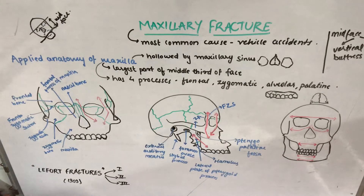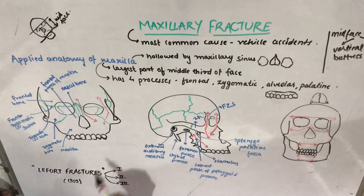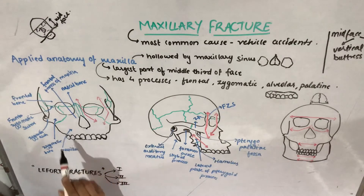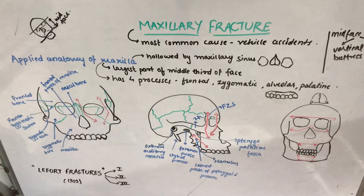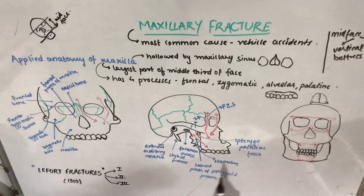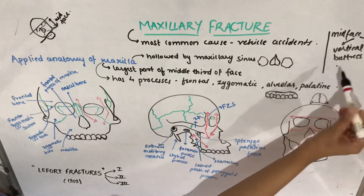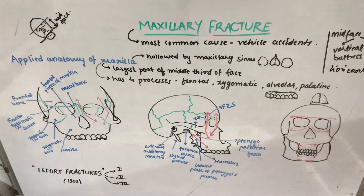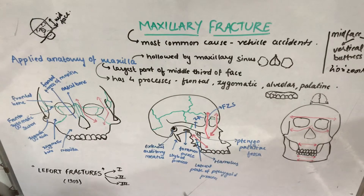The maxillae are designed to absorb masticatory forces. The face has many fragile bones making it prone to fractures, but it also has strong bones which provide strength. The mid-face contains tough frames called buttresses. The fragile bones are surrounded by thicker bones of the facial buttress system, which is responsible for strength and stability.